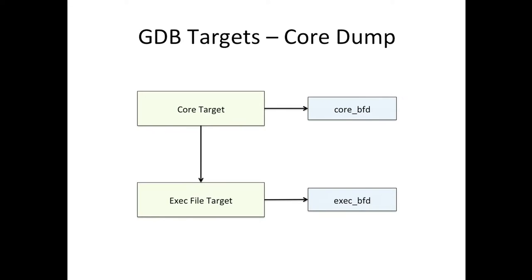When examining a core file, we have an exec file target with an associated exec BFD — GDB uses libbfd from binutils to handle executables. When a core dump is present, we push a core target on top with an associated core BFD object. Memory requests go to the core BFD to fetch memory. If the core file is not there, we fall to the exec file target which uses the exec BFD. When examining a binary alone, you can see initialized variable values because requests fall down to the bottom target.